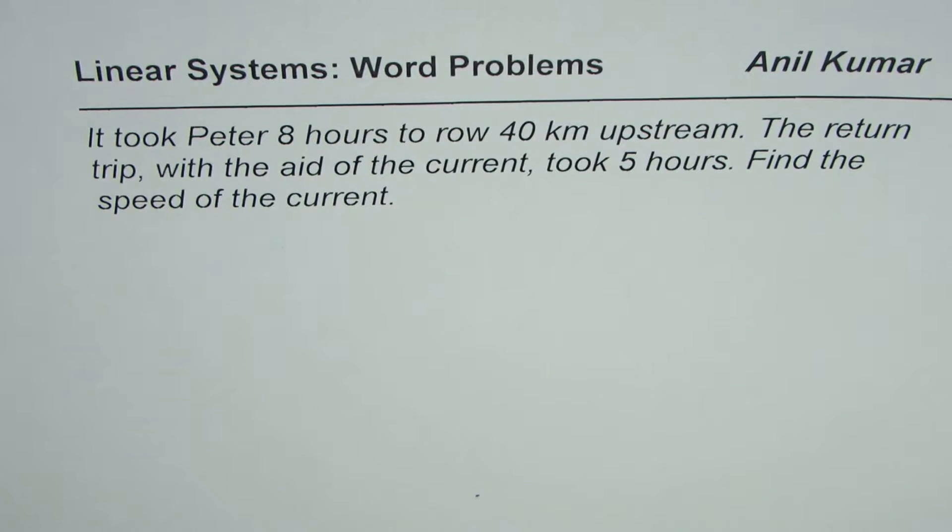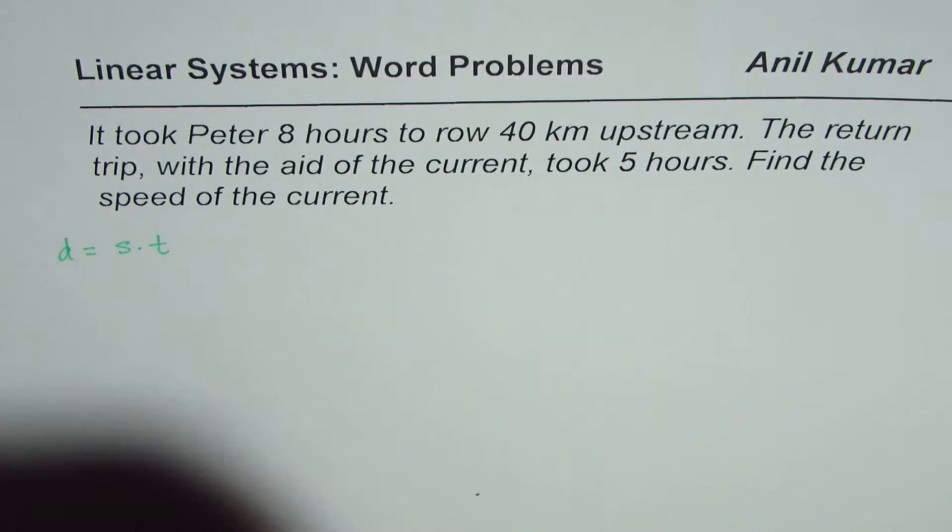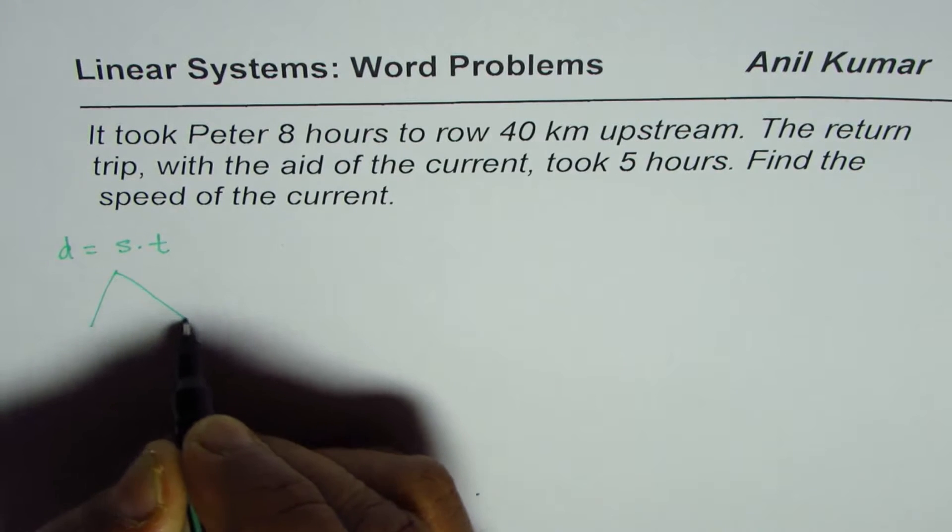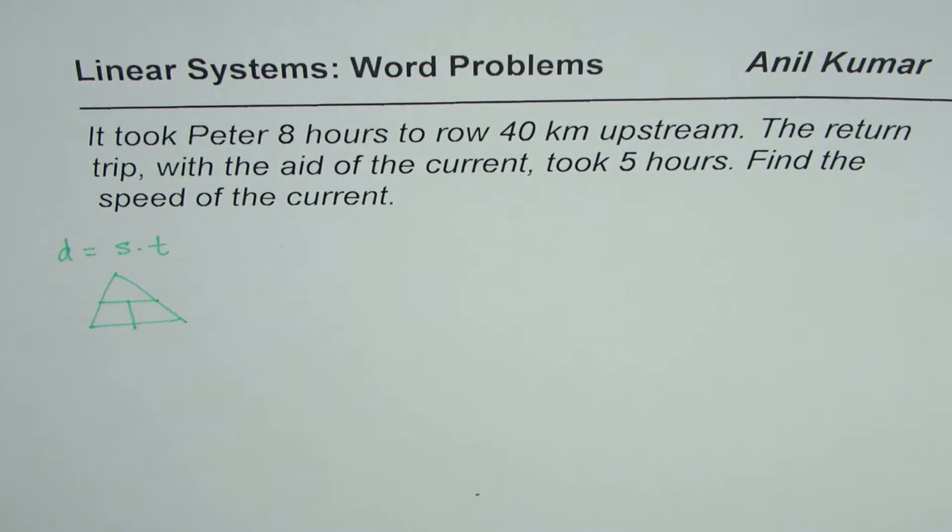Find the speed of the current. As you know, distance, speed, and time - distance equals speed into time. We normally use this triangle here, so no harm just drawing it out. It helps to register, so distance is speed into time.